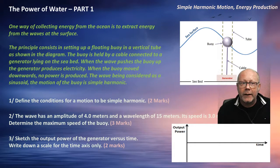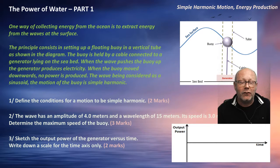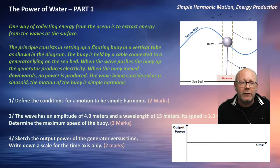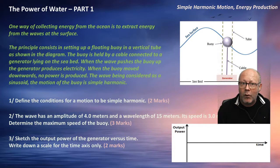One way of collecting energy from the ocean is to extract energy from the waves at the surface. The principle consists in setting up a floating buoy in a vertical tube as shown in the diagram. The buoy is held by a cable connected to a generator lying on the seabed. When the wave pushes the buoy up, the generator produces electricity. When the buoy moves downwards, no power is produced. The wave being considered as a sinusoid, the motion of the buoy is simple harmonic.